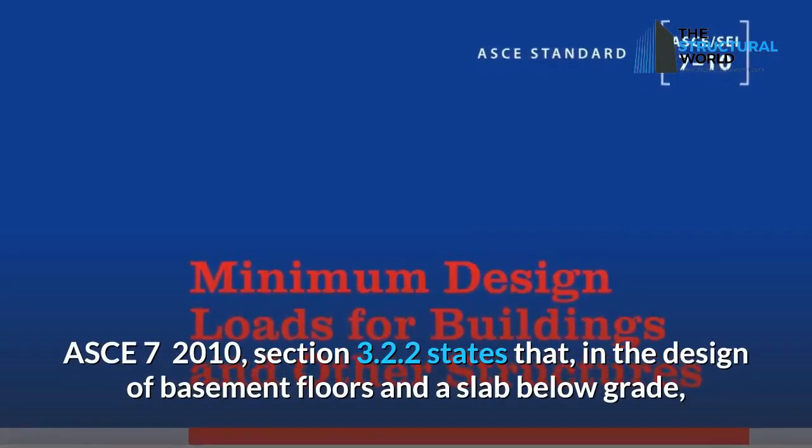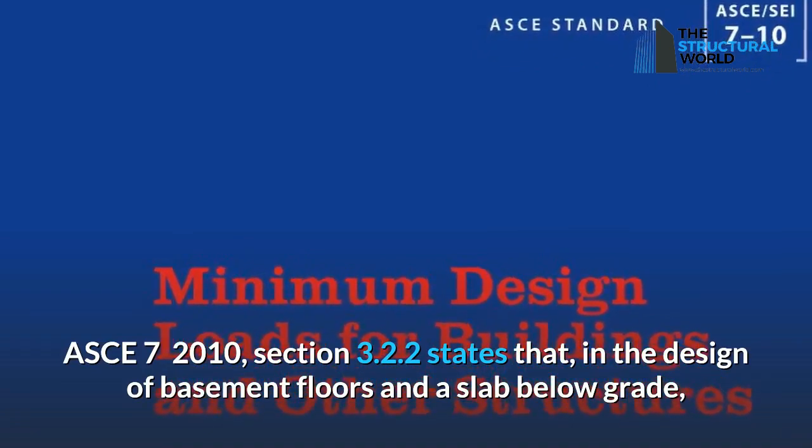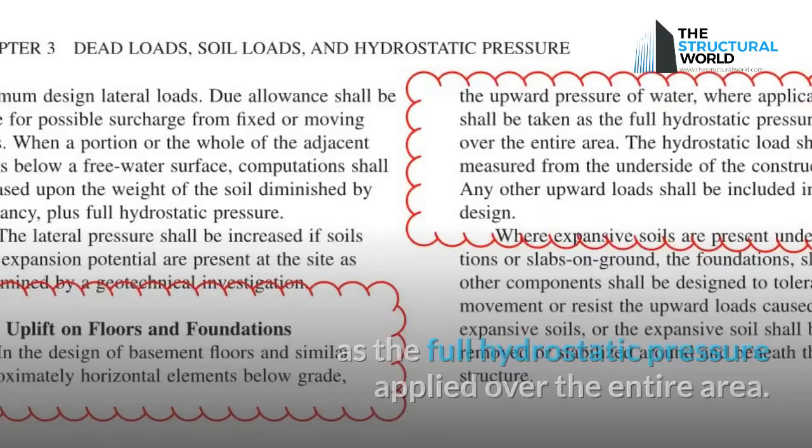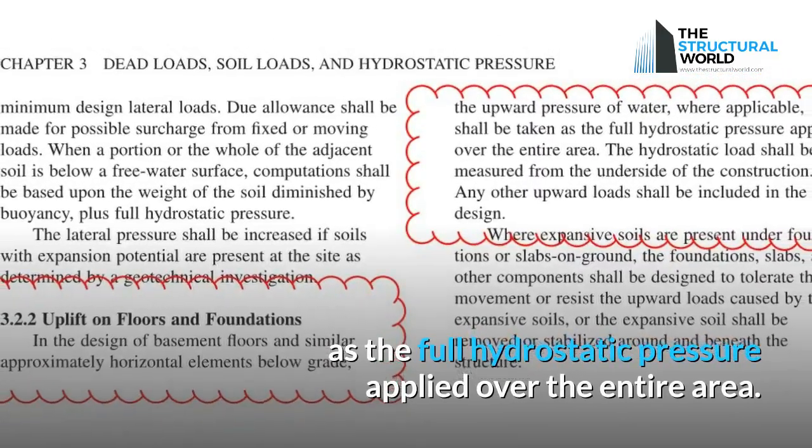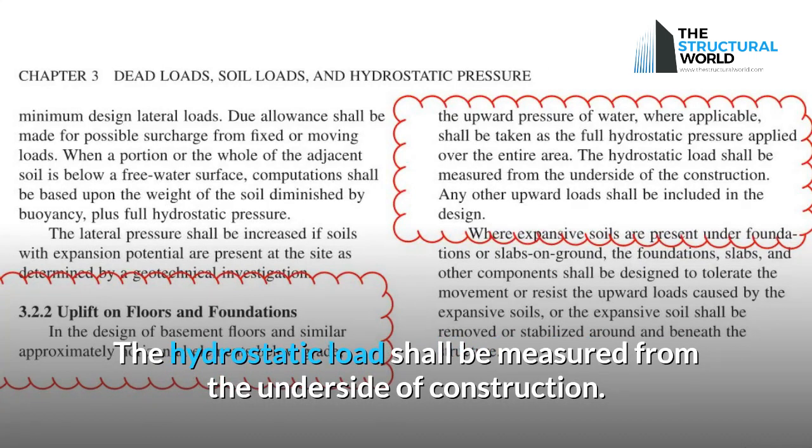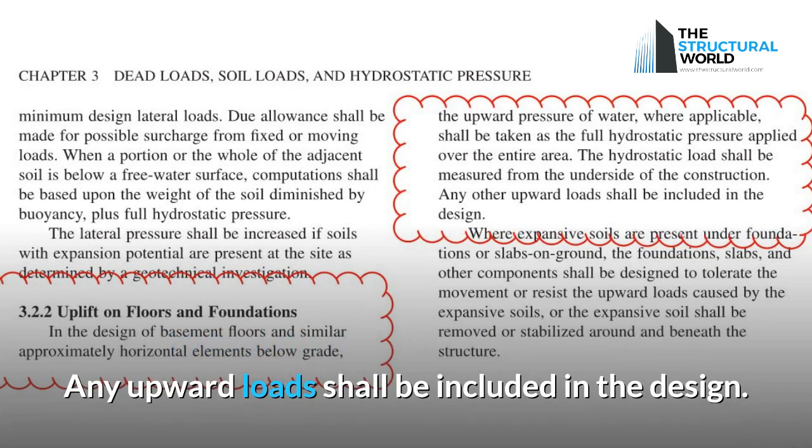ASCE 7 2010, Section 3.2.2 states that in the design of basement floors and slabs below grade, the upward pressure of water shall be taken as the full hydrostatic pressure applied over the entire area. The hydrostatic load shall be measured from the underside of construction. Any upward loads shall be included in the design.